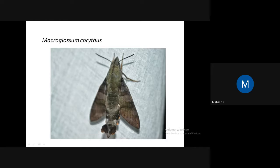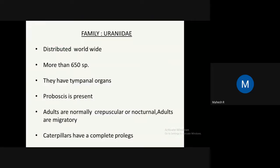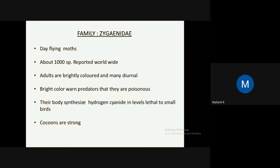Macroglossum corythus: species-level identification requires clear views of both hindwing and forewing markings. They are important pollinators and also migratory. Family Uranidae is also a common family with more than 650 species worldwide. Tymbal organs are well developed and proboscis is present. Mostly seen in the morning. Caterpillars have complete prolegs. Common Uranidae include Micronia aculeata (gray-spotted tail moth) and Facidia lucasura (crescent-wing Uranidae). Family Zygaenidae are day-flying moths with about 1,000 species reported worldwide.